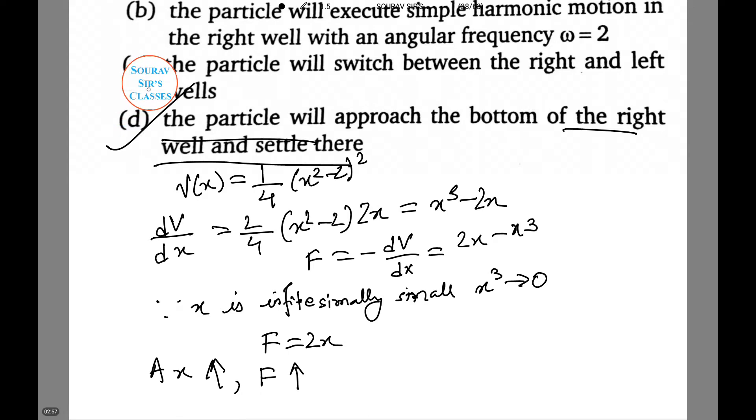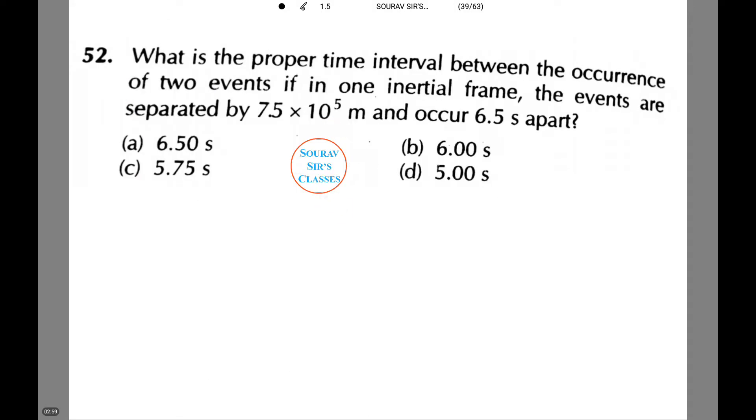Moving on to the next question. The next question is a very interesting one. You will see why I am saying this is interesting, because these are the questions where students usually make mistakes. The answer will be very simple. Let's see what the question is. What is the proper time interval between the occurrence of two events if in one inertial frame, the events are separated by 7.5 × 10⁵ meters and occur 6.5 seconds apart?